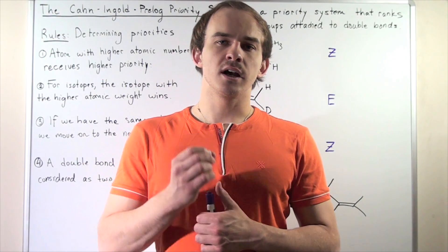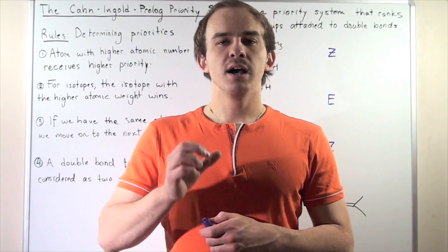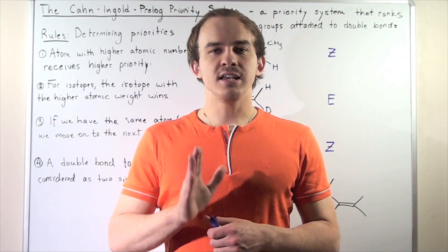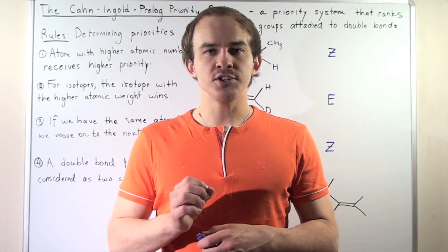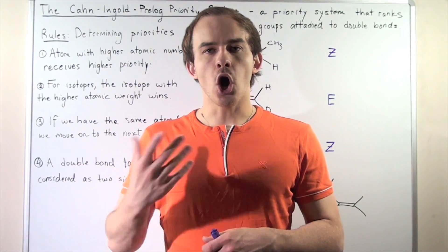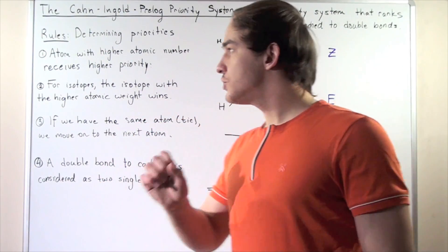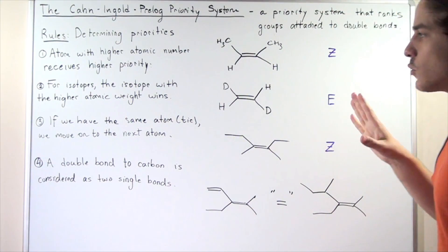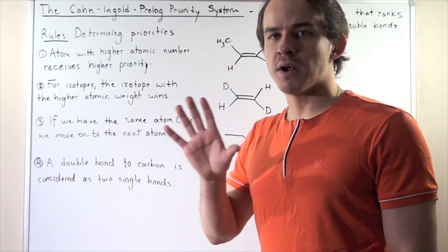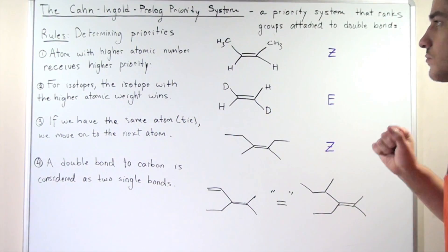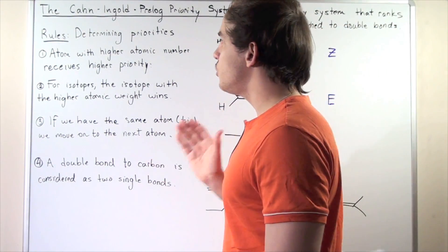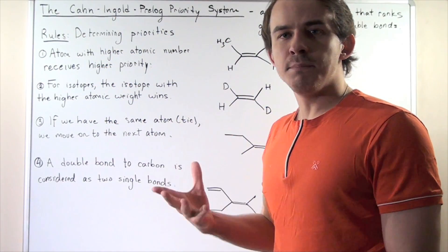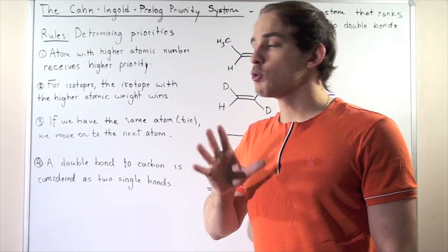In this lecture, we're going to discuss the Cahn-Ingold-Prelog priority system. The system is used for either one of two things: determining the absolute configuration of enantiomers — either R or S absolute configuration — or ranking groups attached to double bonds. In this lecture, we're going to focus primarily on that second usage. Whenever you're using this system, four important rules must be followed to find the highest priority groups.